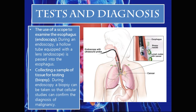Tests and diagnosis: The use of a scope to examine the esophagus is called an endoscopy. During an endoscopy, a hollow tube equipped with a lens — an endoscope — is passed into the esophagus. While this process is being done, a sample of tissue for testing, called a biopsy, can also be taken so that cellular studies can confirm the diagnosis of a malignancy.